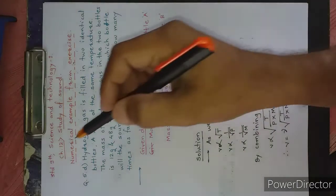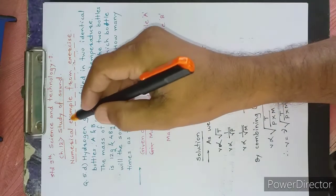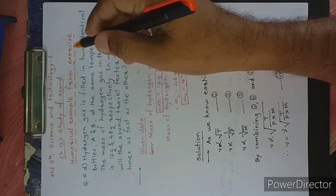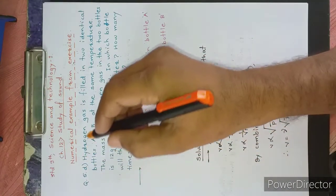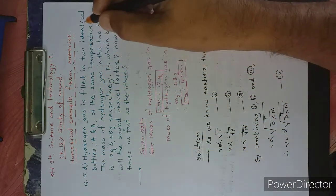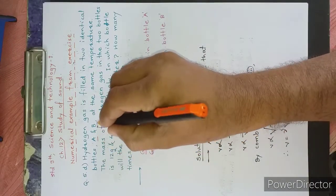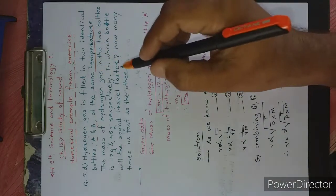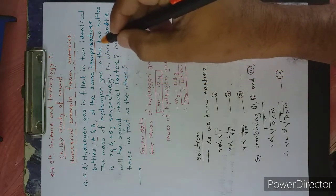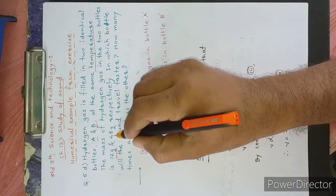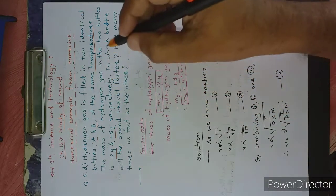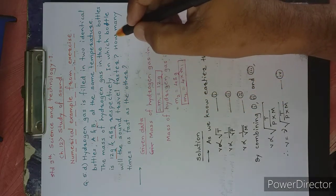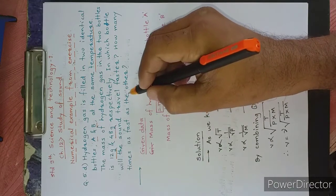Hello friends. In Standard 9th Science and Technology Part 1, Chapter Number 12, Study of Sound, the numerical example solved from this exercise is Question Number 5D. Hydrogen gas is filled in two identical bottles, bottle A and bottle B, at the same temperature. The mass of hydrogen gas in the two bottles is 12 grams and 48 grams respectively. In which bottle will the sound travel faster and how many times as fast as in the other?